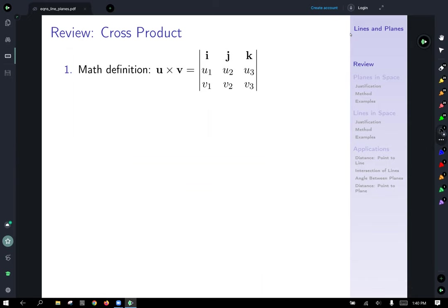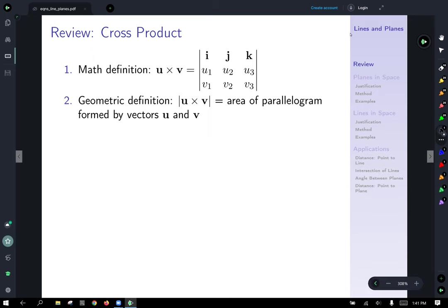So the definition of the cross product is that's the determinant of this 3 by 3 matrix. Now the geometric definition and interpretation is that the absolute value of the cross product gives us the area